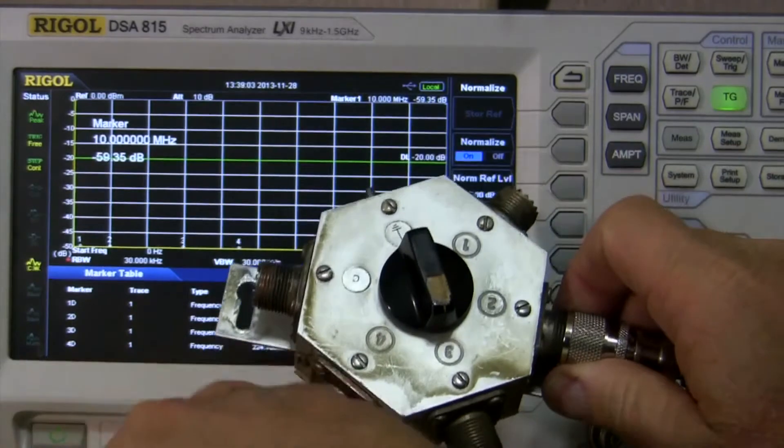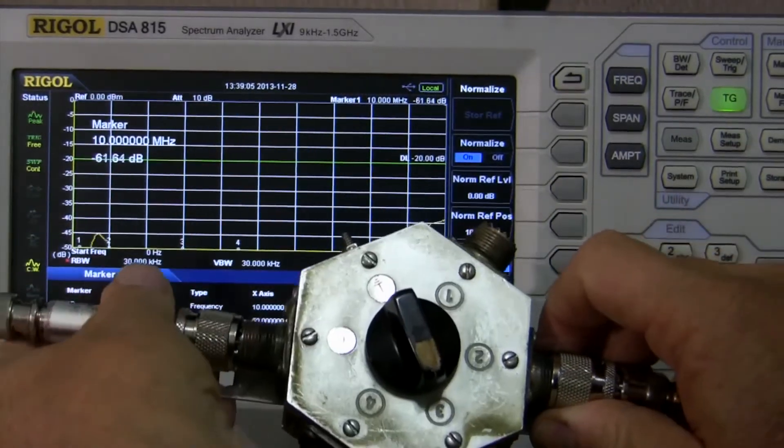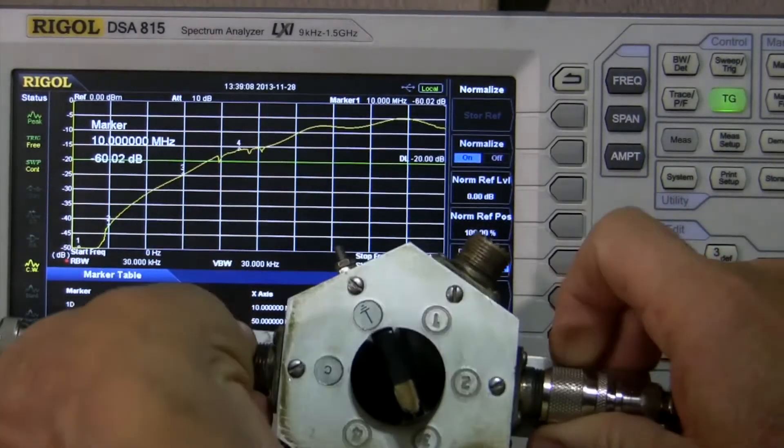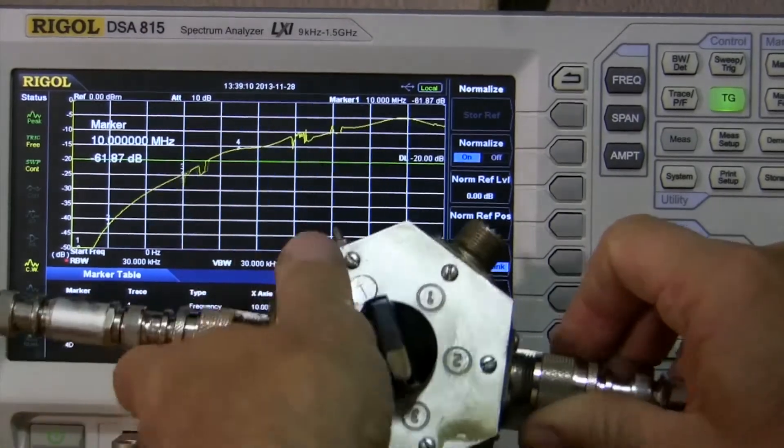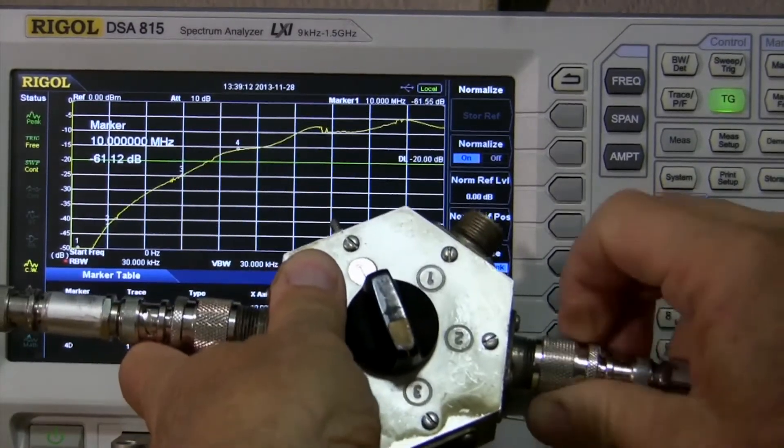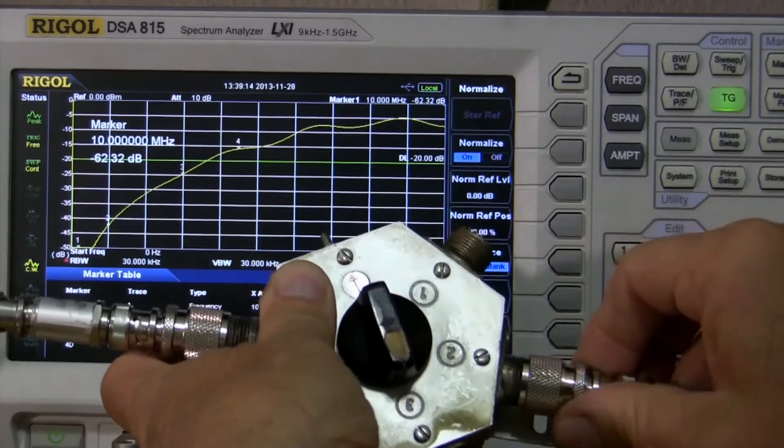And then the common is right here. We'll put this on the common. Same thing applies here, by the way, on rocking these guys a little bit to try to get them in the detents so you can screw it all the way down.